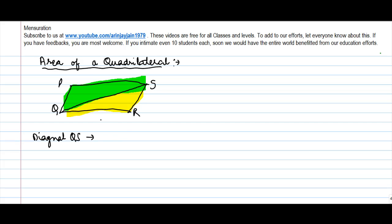You can say that area of quadrilateral PQRS is equal to area of triangle PQS, which is the green portion, plus area of triangle QRS. So, you need to add the area of these two triangles to get the area of the quadrilateral.